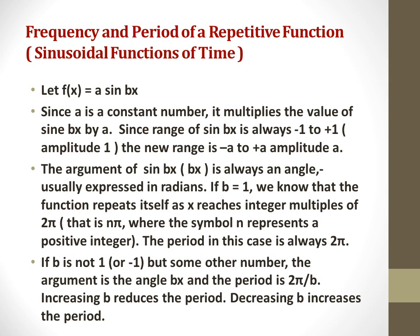The argument of sin bx, bx is always an angle, usually expressed in radians. If b equals 1, we know that the function repeats itself as x reaches integer multiples of 2π. The period in this case is always 2π.